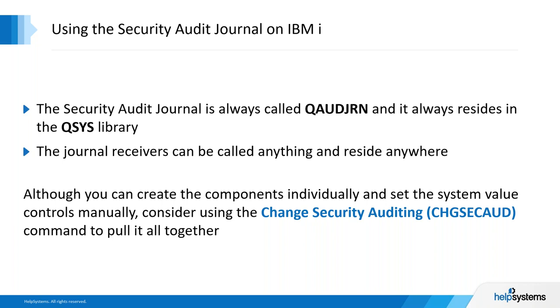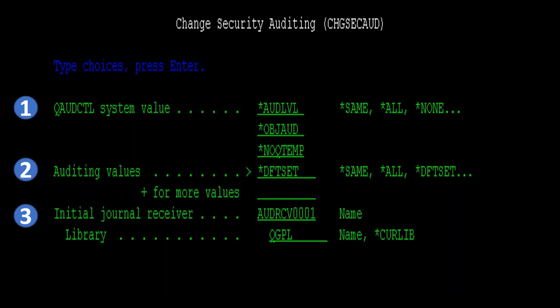You can create all the moving parts one by one, or you can set system value controls manually. But I would recommend, especially if this is the first time, using the Change Security Auditing command to pull all the moving parts together and simplify that task. This screen has numbered parameters — one, two, and three — and we're going to talk about each of them individually so you have a good understanding of what they do and how they work.